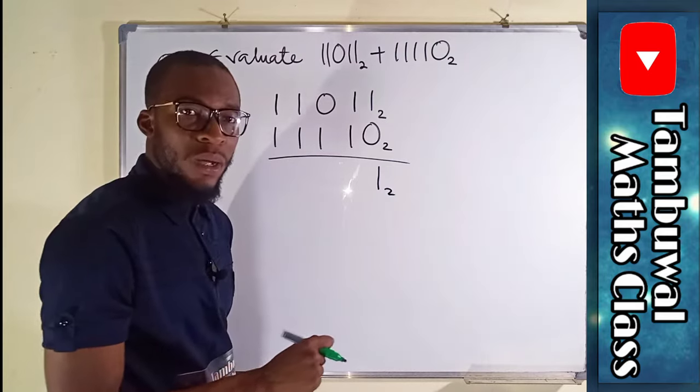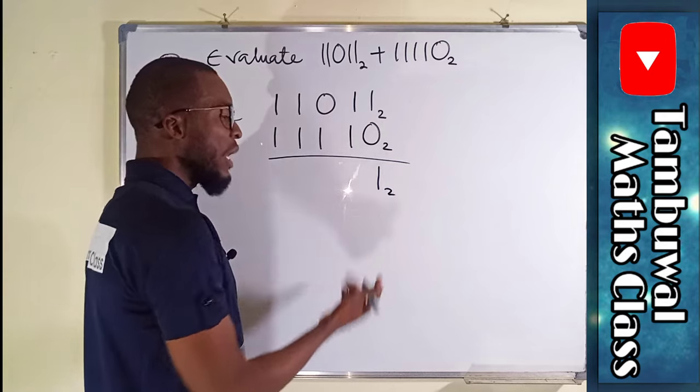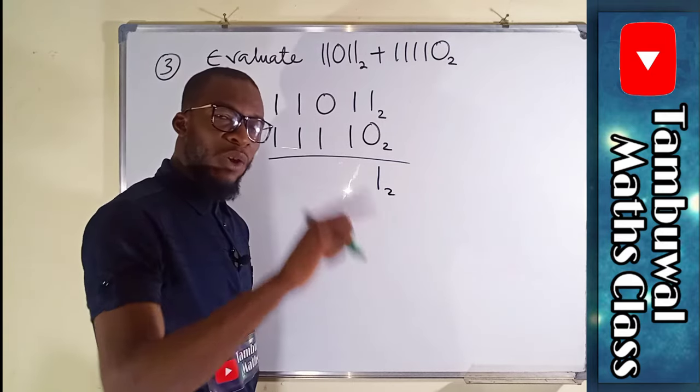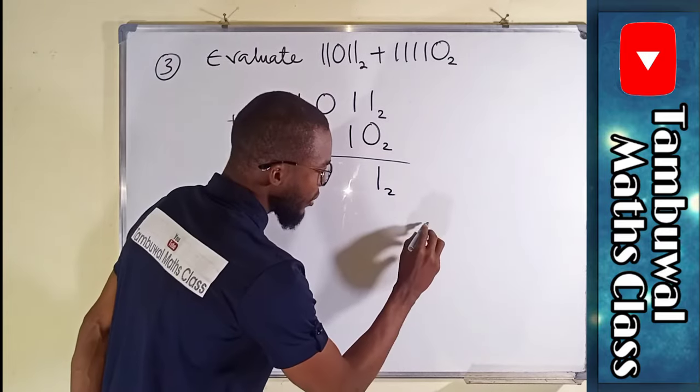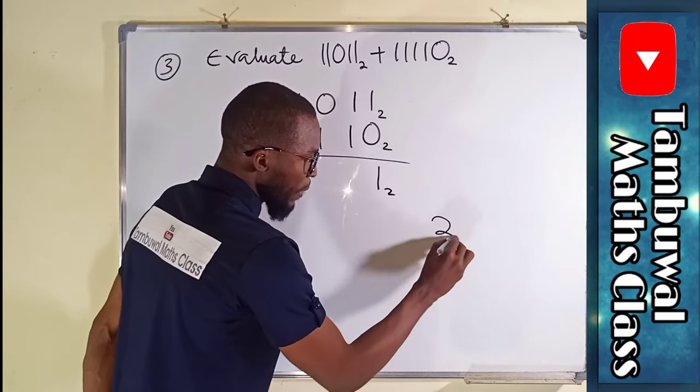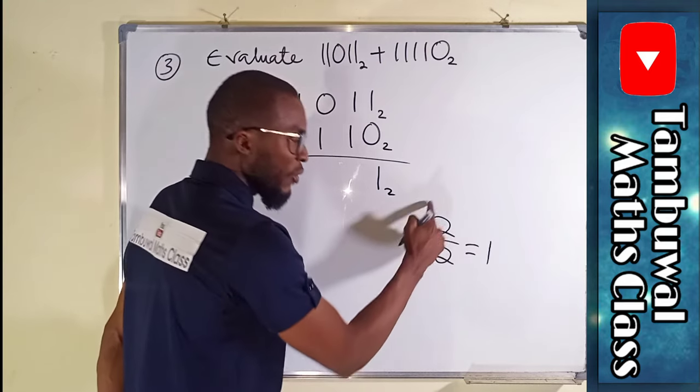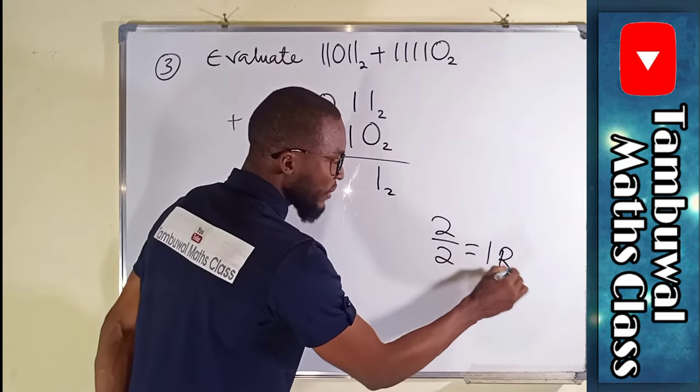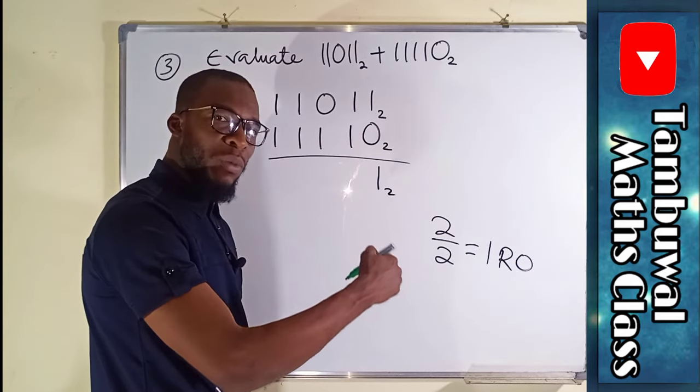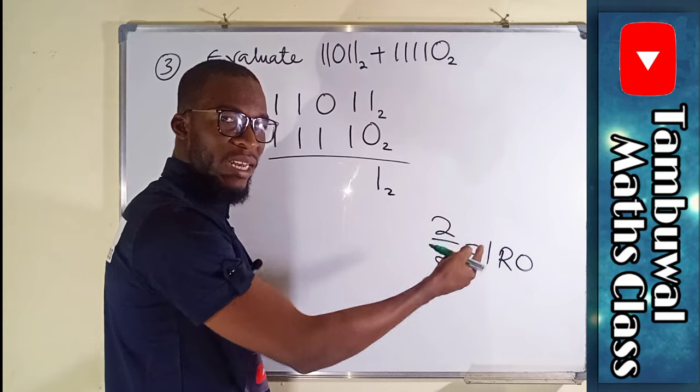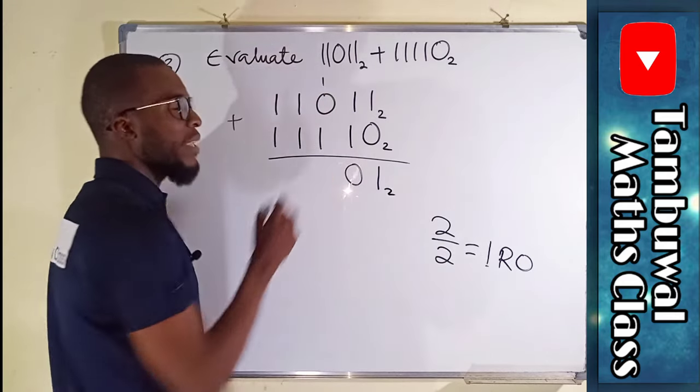One plus one is two. And we say we do not have two in the set of binary numbers. So how do we do? How many twos are there in two? We only have one single two without remainder. This is how it is going to be. One plus one is two, divide by the base, which is also two. And we are going to get one because it can go into two one time without remainder. So the remainder is zero. So always write the remainder once the number is equal to the base or greater than the base. So we have zero here. Then we take this one to the next number here.